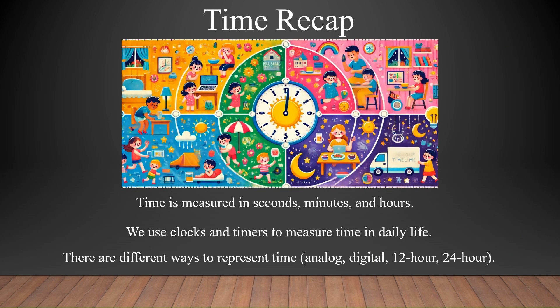Here is the recap. Time is measured in seconds, minutes and hours. We use clocks and timers to measure time in daily life. There are different ways to represent time: analog, digital, 12-hour clock, 24-hour clock — all of which you will learn later. You can pause the video and watch this timeline, given in a different way.